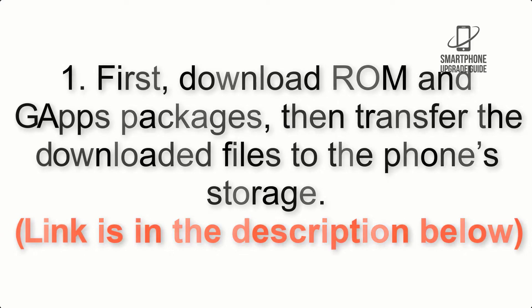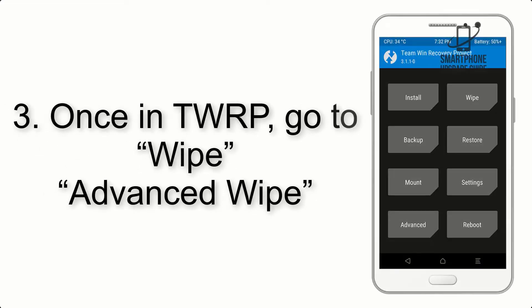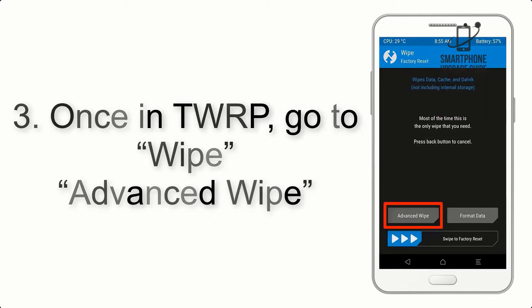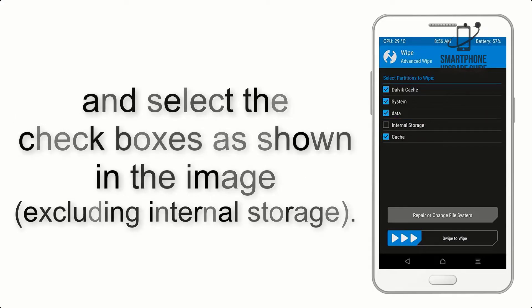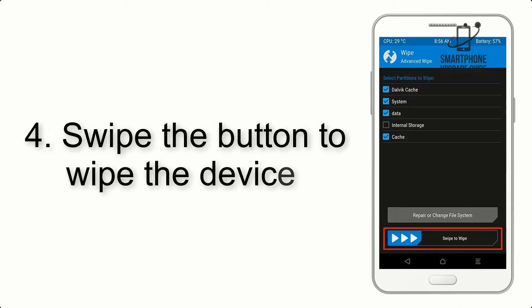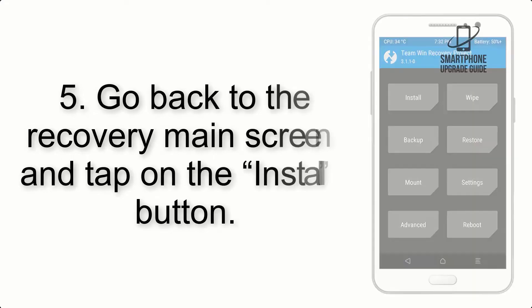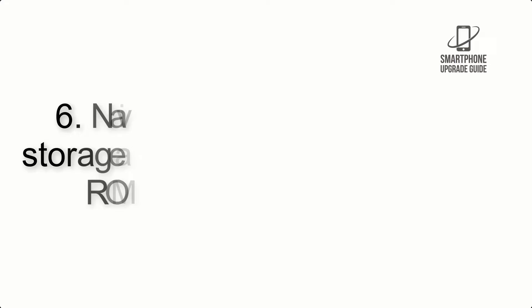Step 2: Boot your device into TWRP recovery. Once in TWRP, click on Wipe, then Advanced Wipe, and select the checkboxes as shown in the image, excluding internal storage. Step 4: Swipe the button to wipe the device.